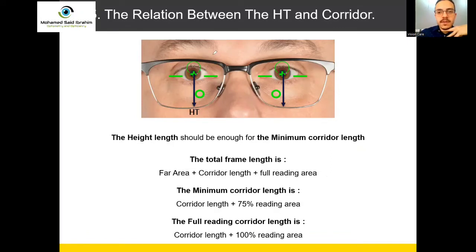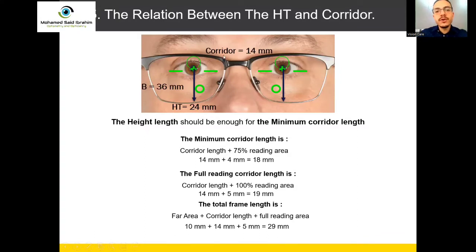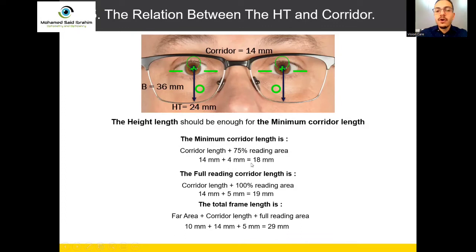Let me give you numbers to make it clearer. If we select corridor 14 mm, and the customer height is 24 mm, and B — the total height of the lens — is 36 mm: the height length should be enough for the minimum corridor length. The minimum corridor length is 14 plus 4 mm (which is 75% of the reading area) = 18 mm. The customer height is 24, which is more than 18 — perfect. We can select corridor 14 for this customer. He can see far vision, intermediate, and reading very comfortably.